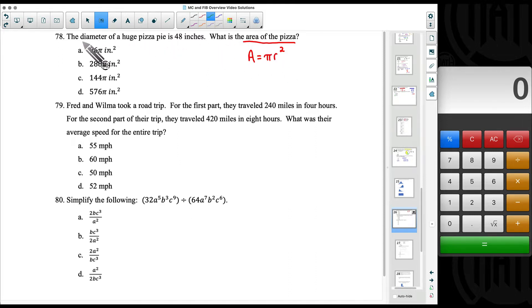In order to find the area of the pizza we need the radius. That's what that R stands for. Since the diameter is 48 inches, the radius is always half of the diameter, so the radius will be 24 inches.